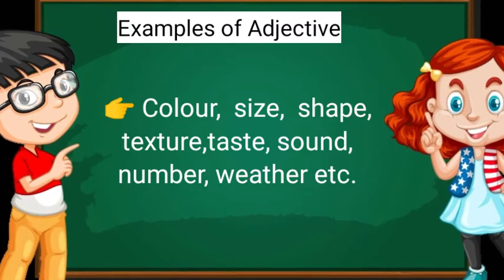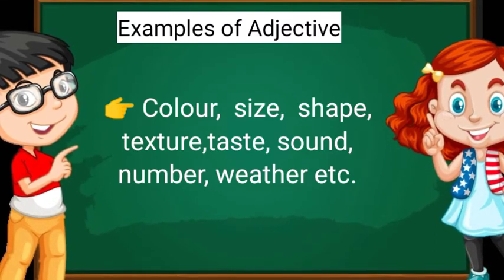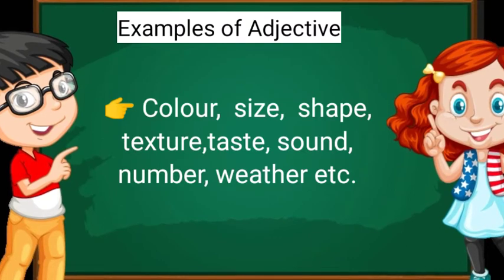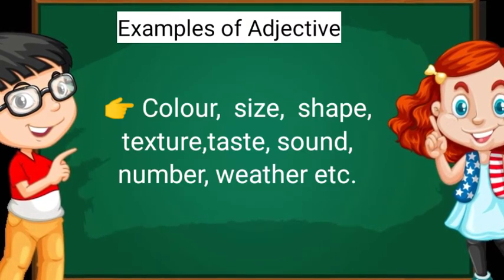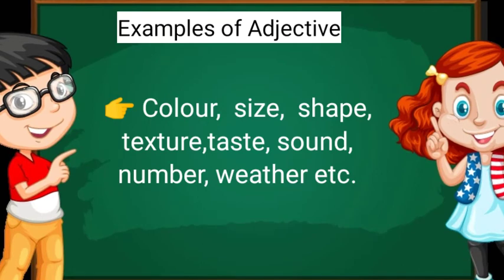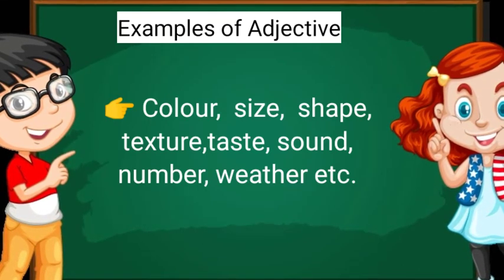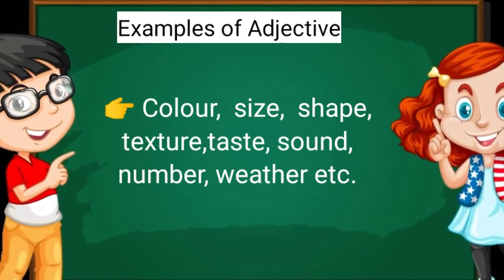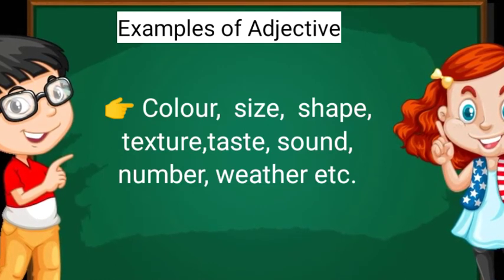Jaisi kooi bhi chiz ka color bata na ho — red balloon. Red mein bhi color hota hai, red color bhi hota hai. Balloon ka yellow. To balloon eke noun hai, balloon naam hai. To balloon ka kaisa color hai? Matlab unki speciality bata raha hai. Size me kaisa hai, bada chota. Texture me kaisa hai, taste me kaisa hai. Yeh adjective bataata hai.